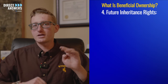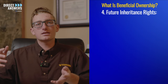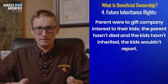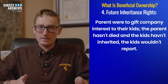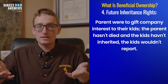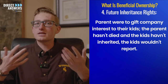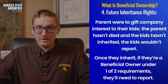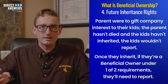The fourth exception is for future inheritance rights. For example, let's say that a parent were to gift a company interest to their kids. If those interests haven't vested yet — meaning the parent hasn't died and the kids haven't inherited that interest — then those kids wouldn't need to report their information to FinCEN. But once they become owners of the company, then they're going to need to report their information to FinCEN.